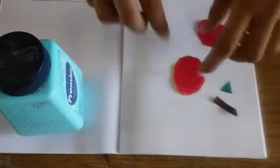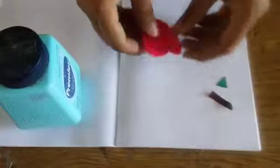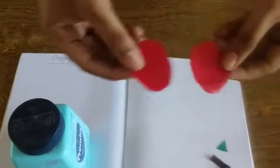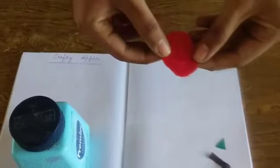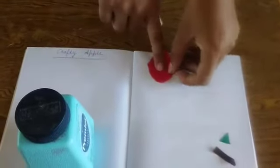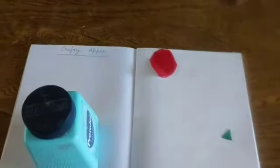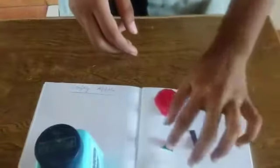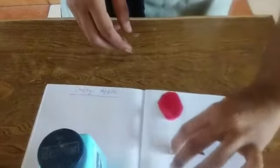See, these two oval shapes, two oval shapes are used in the apple and this rectangle is used for the stem. And this triangle is used as a leaf. Okay?